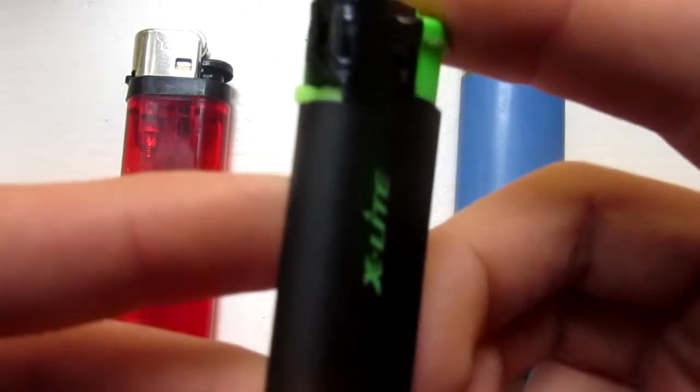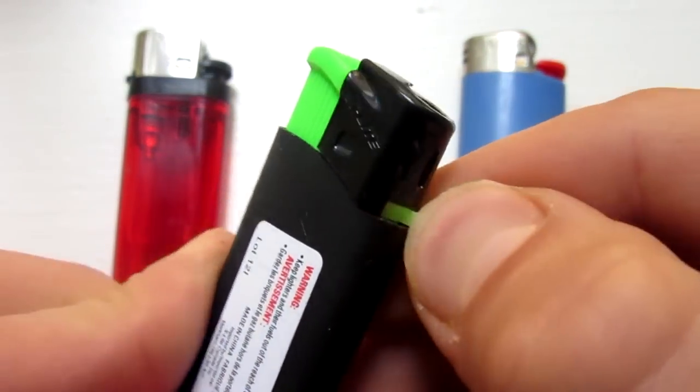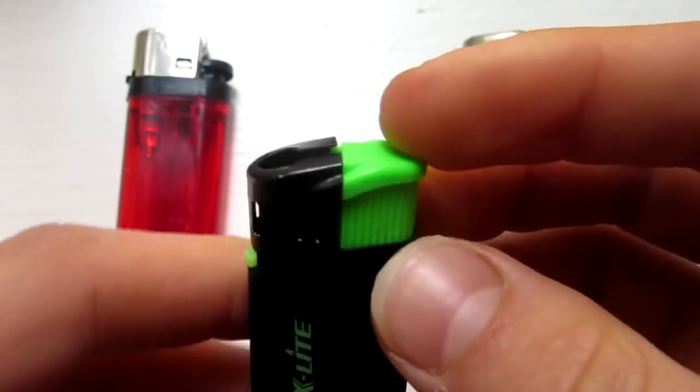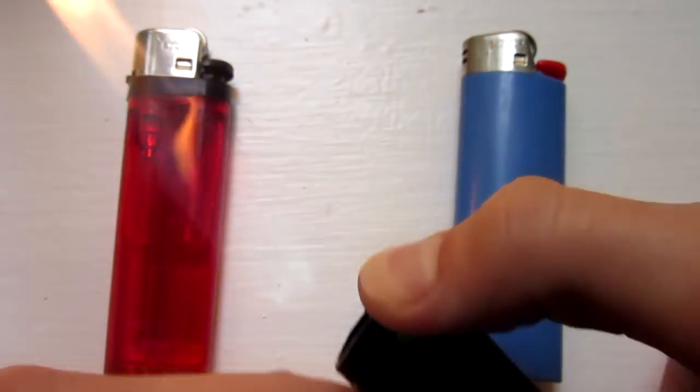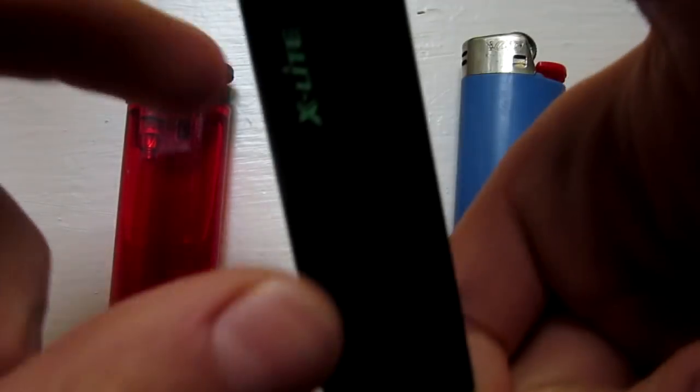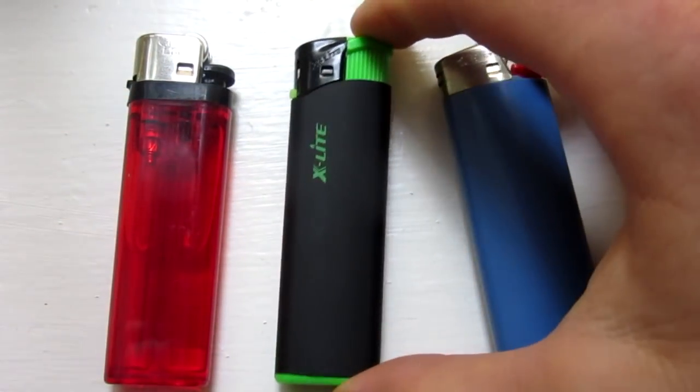Now, other lighters do have the adjustable knob, like this one here called X-Lite, and it does still work pretty good. Not as good as the other one, but if it has the knob, it will work.